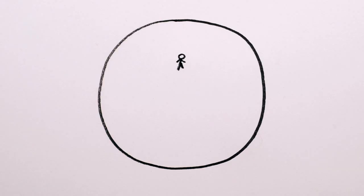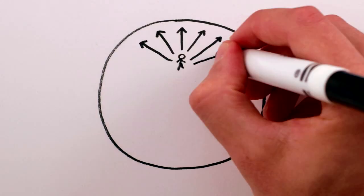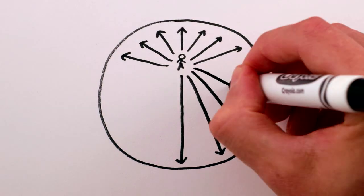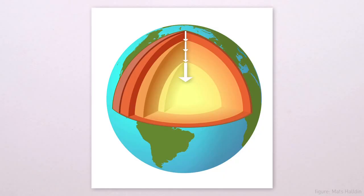As you continued to fall closer to the center, so much of the earth's mass would now be above you that it would begin to seriously cancel out the attraction of the mass below, and the downward pull would weaken until you reached the center.